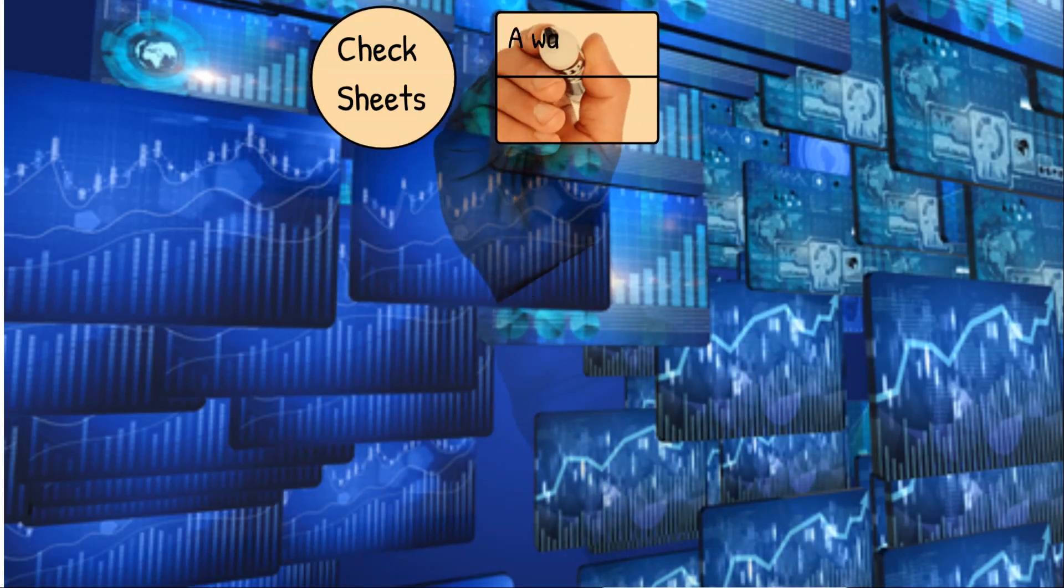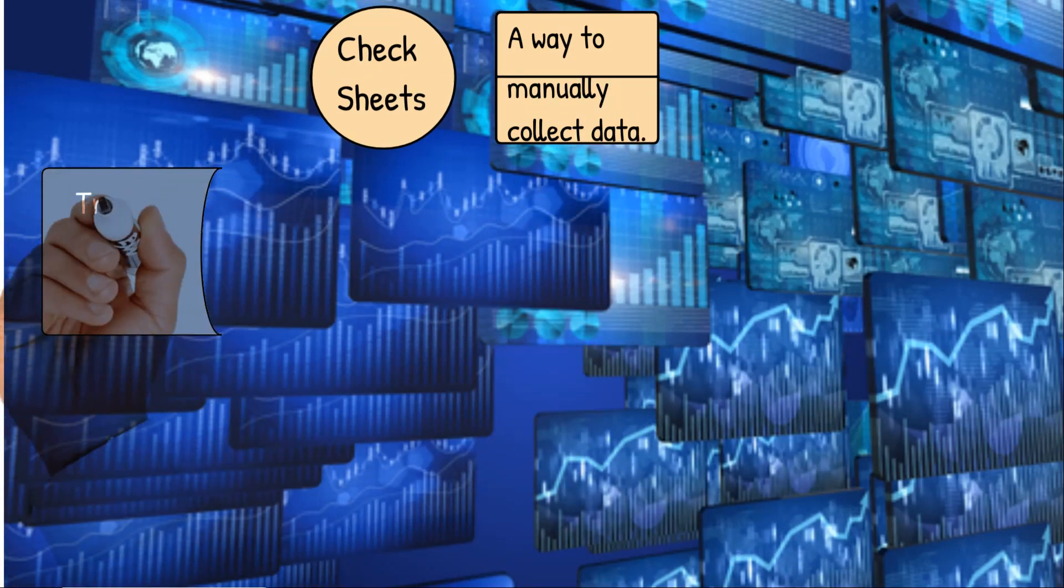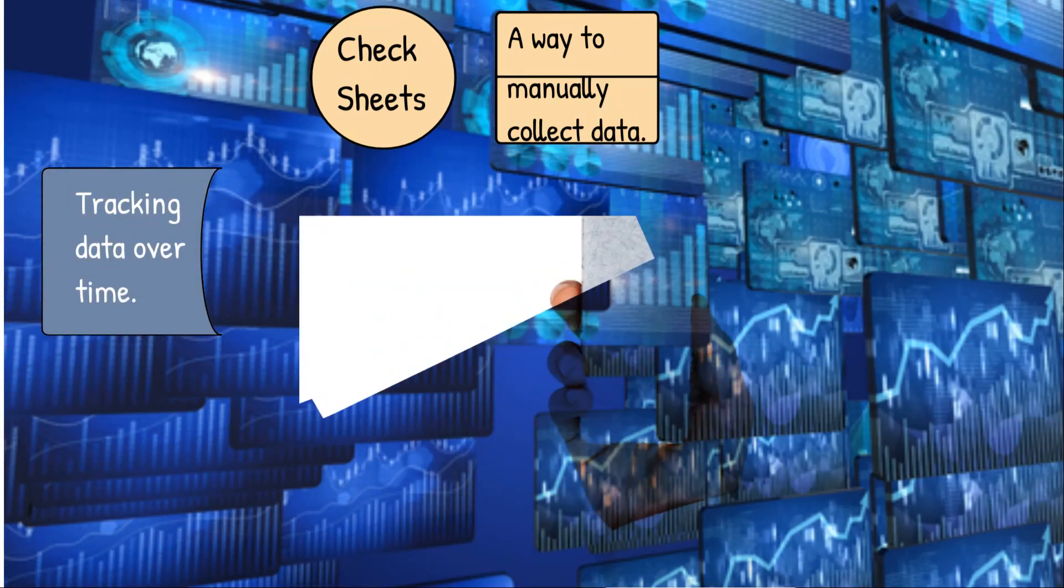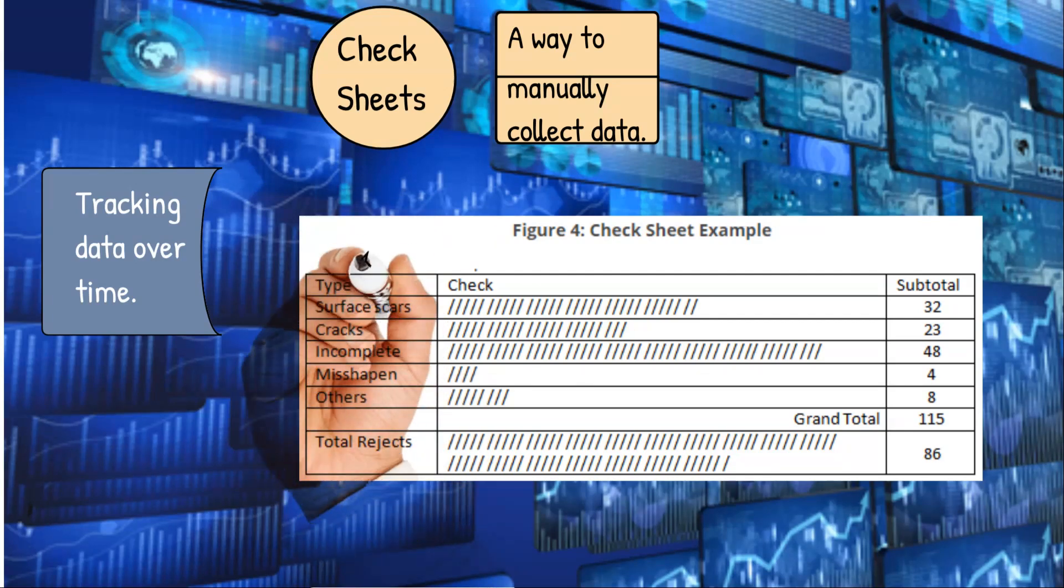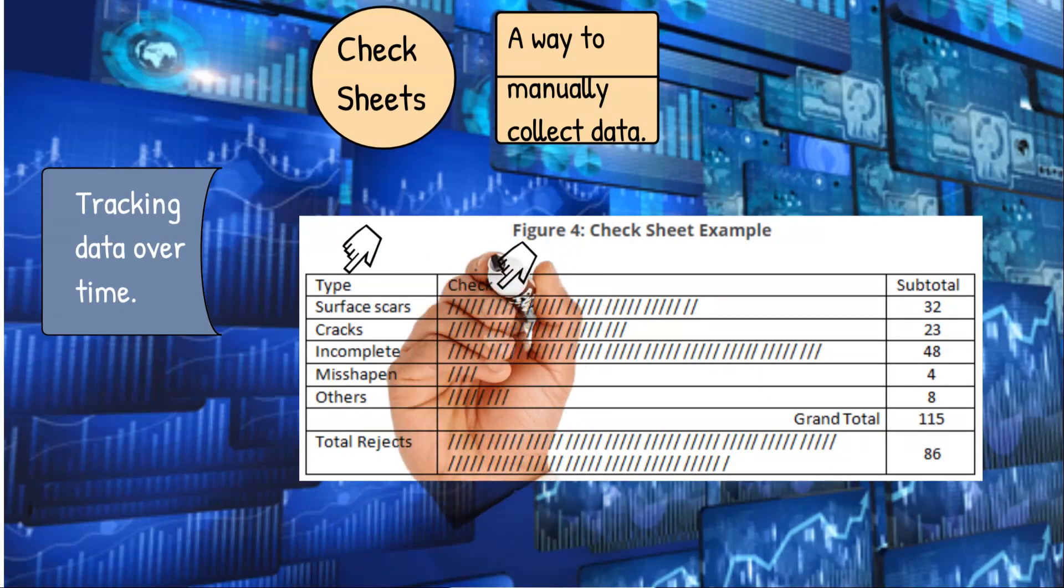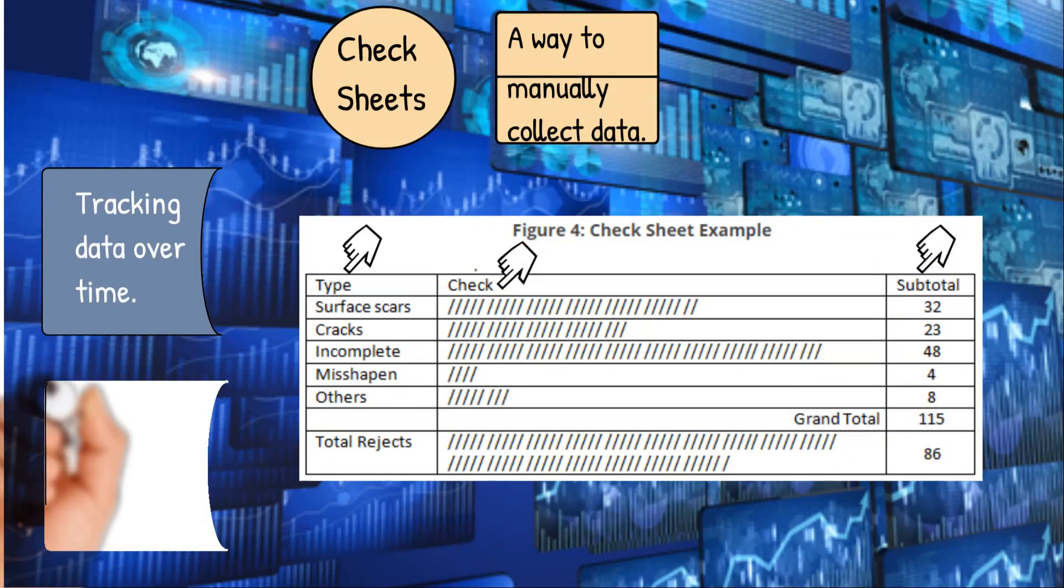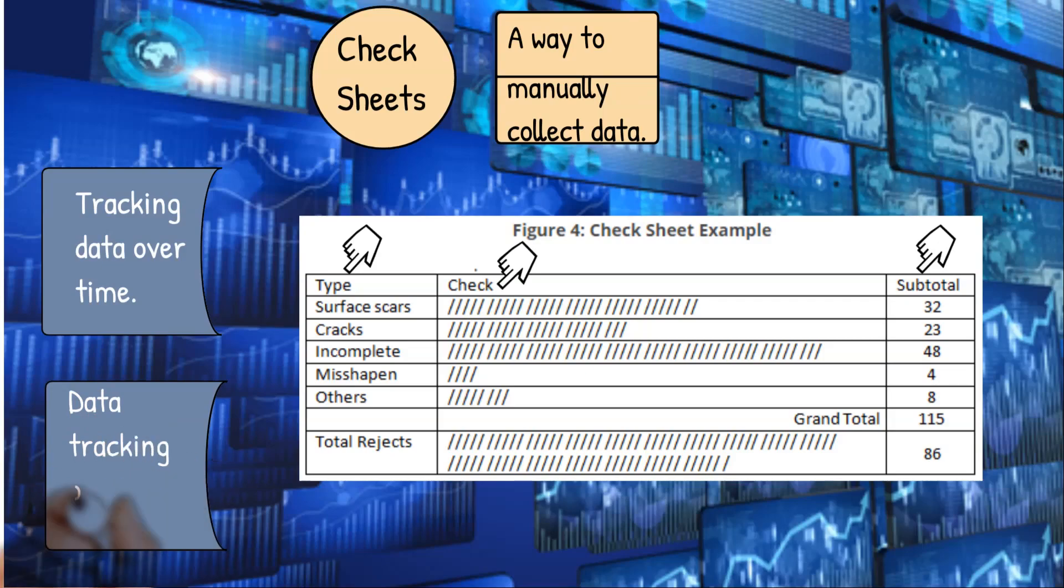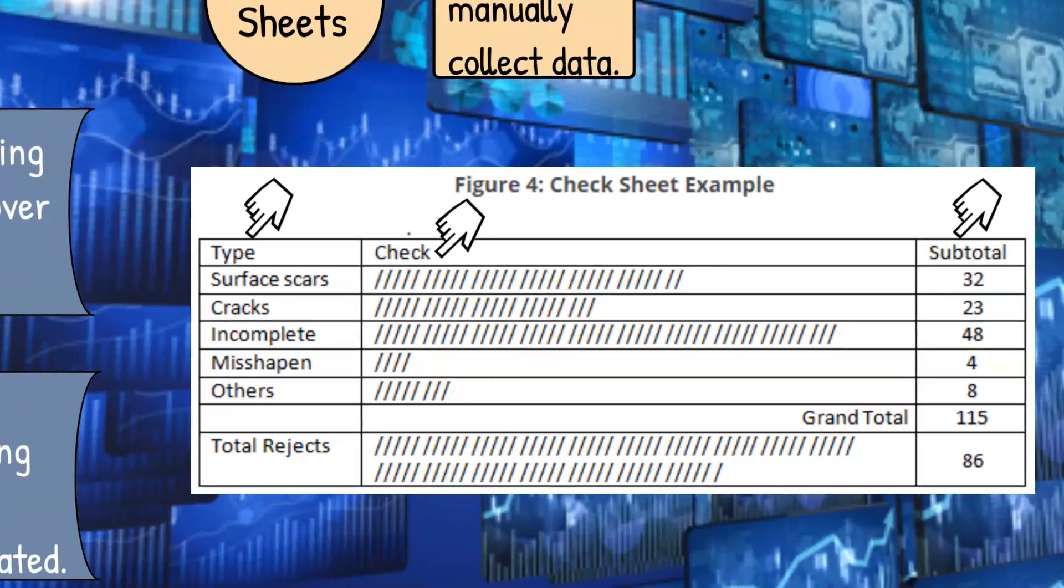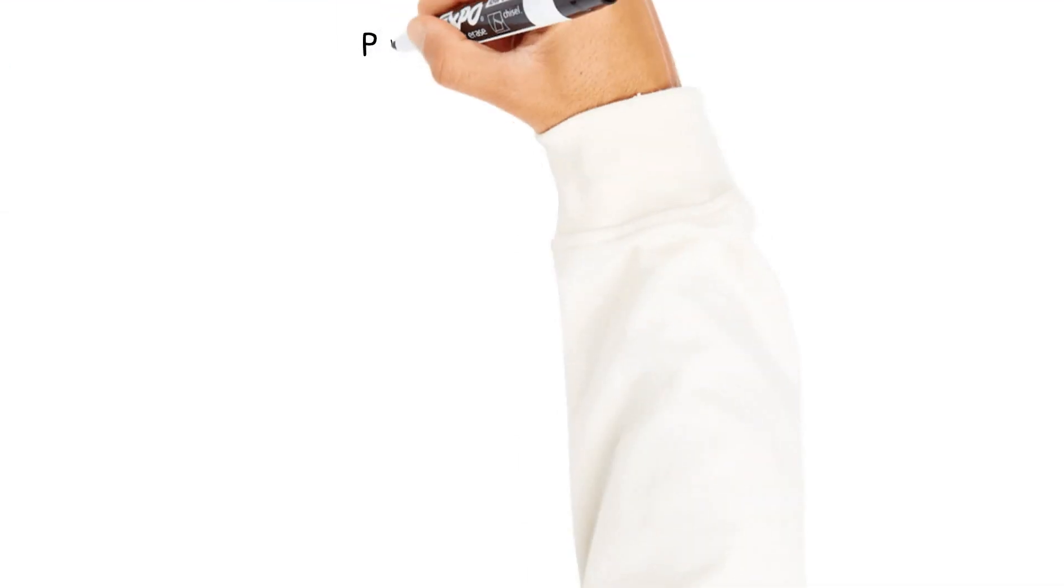From here we move to check sheets as the next simple tool. It's a way to manually collect data. Here's an example where we've been collecting data over time on reasons for defects. You have the type of defects like surface scars and cracks. You see how often they occur by placing a tick mark, then you subtotal them and you get 86. Nowadays most of this data tracking is done automatically, but this is a check sheet that can be used to help collect data on reasons for defects.